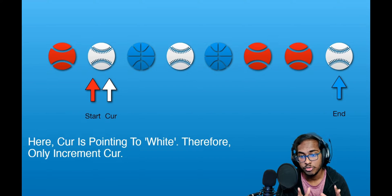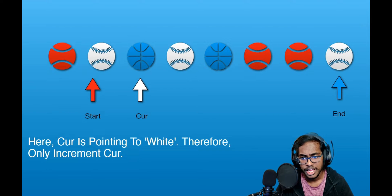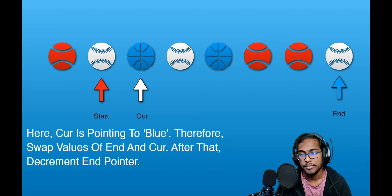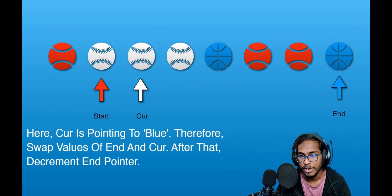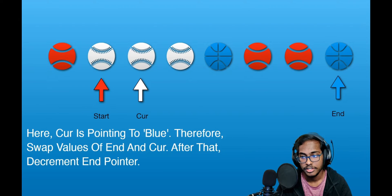Now we can see that cut is pointing to a white ball. In this case, we only increment cut because white balls are supposed to be in the center — we can assume it's where it's meant to be. After incrementing cut, it now points to a blue ball. When cut points to blue, we swap the balls at cut and end, moving the blue ball to the end and the other ball back to where the blue was. Then we decrement end and do not increment cut.